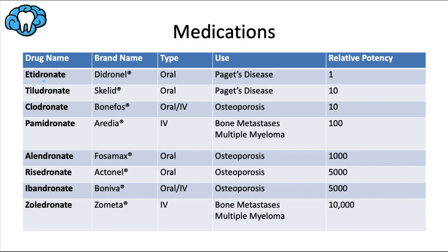Also note that all of these drug names end with '-dronate.' And everything from pamidronate down has a nitrogen side group, making it significantly more potent than the drugs above. We'll talk more about why that is in a future slide.